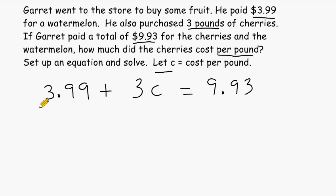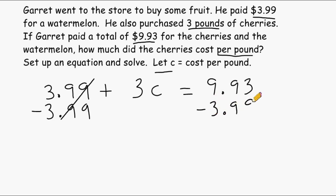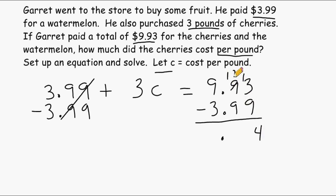The first step is to take $3.99 and subtract it from both sides. So we have zero on this side, and we do the same thing on the other side of our equation. By doing this, this gives us how much the cherries cost. We bring the decimal straight down: 13 minus 9 is 4, 18 minus 9 is 9, and 8 minus 3 is 5.